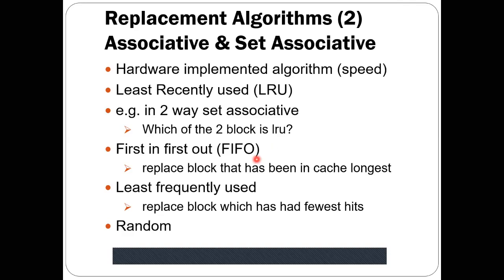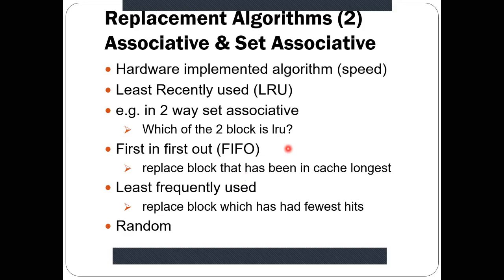Next is First In First Out, that is FIFO. It says: replace that block from the cache that has been in the cache the longest — the oldest block. This FIFO algorithm can be simply implemented using a round-robin fashion.